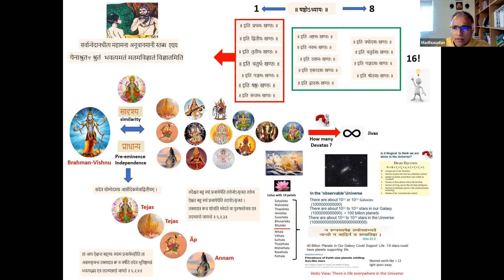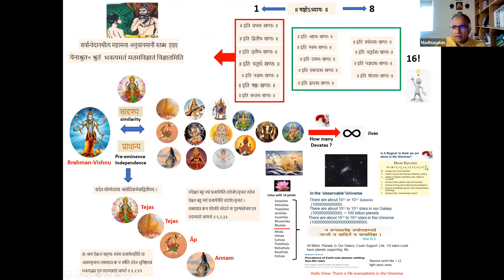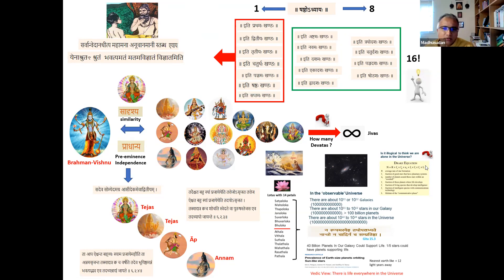How many Devatas are out there? Two answers came from participants: 33 crores and 33 Devatas. Pragnesh clarified that 'koti' in its real meaning can mean 'type' — so 33 crore actually means 33 in number. Paresh added that koti has two meanings: crore, but also types — so there are 33 types of deities rather than 33 crores. So koti is misinterpreted by some as crore, while they are trying to say type.